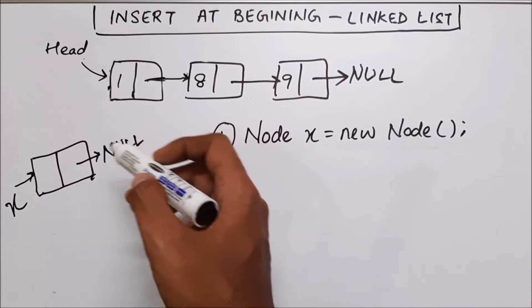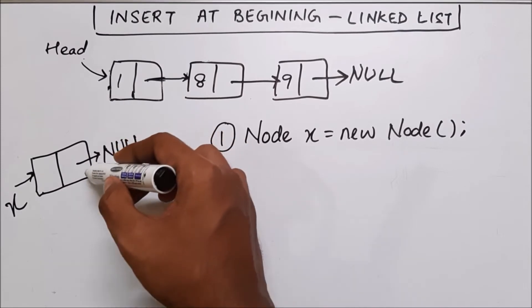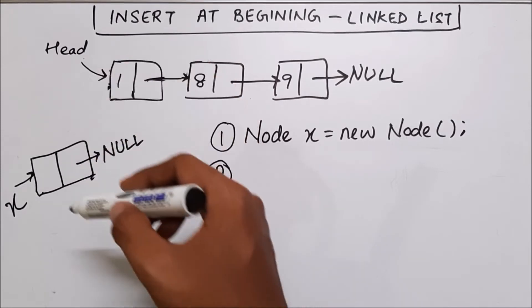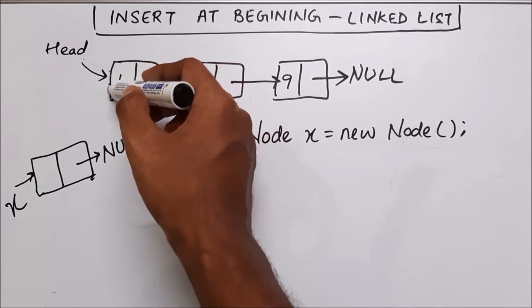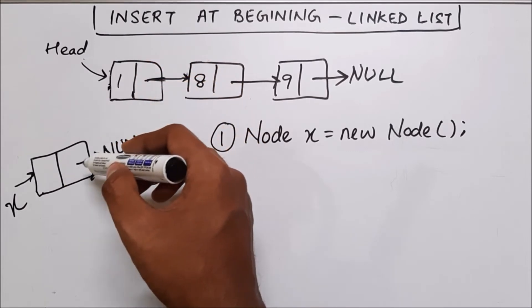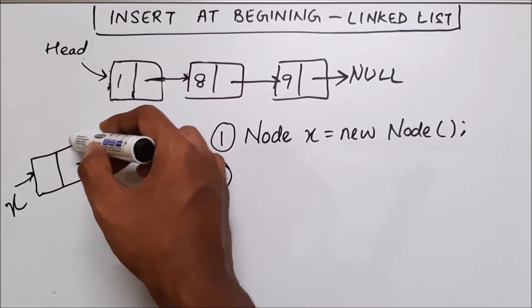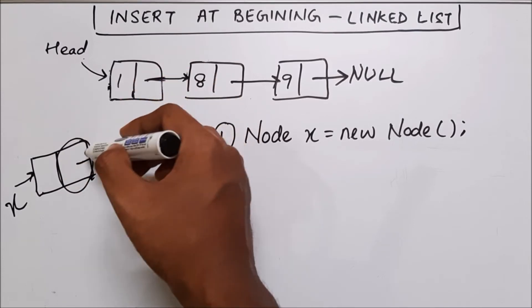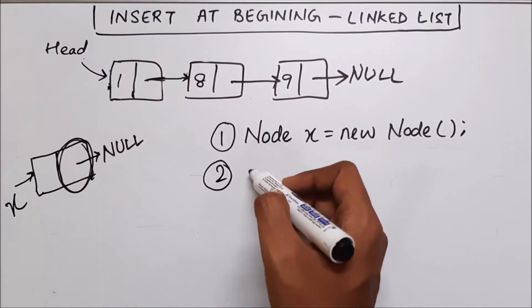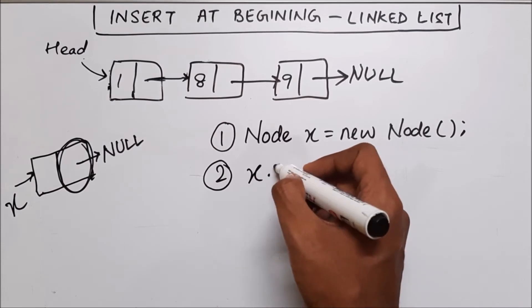So the second thing which we have to do is we have to link this new node to the starting of the already present linked list. So how we will do this, we have to put the address of this linked list here. What is this place, this place is nothing but x.next.